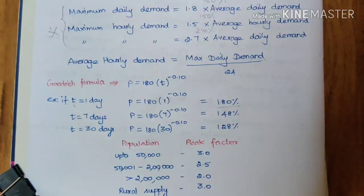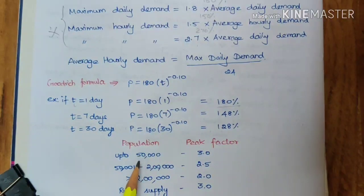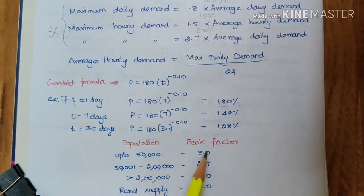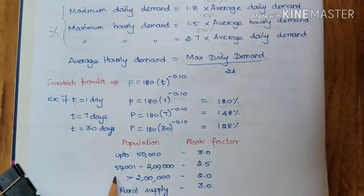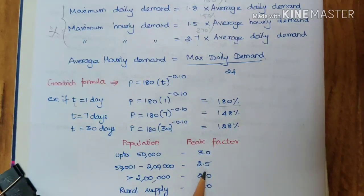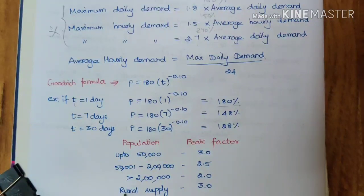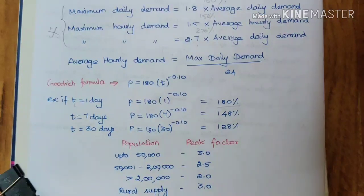Based on population, a fixed peak factor is provided by the GOI manual. For populations up to 50,000, the peak factor is taken as 3. For populations above 50,000 up to 2 lakh, it is 2.5. For populations greater than 2 lakh, it is 2. For all rural supply, the peak factor is taken as 3.